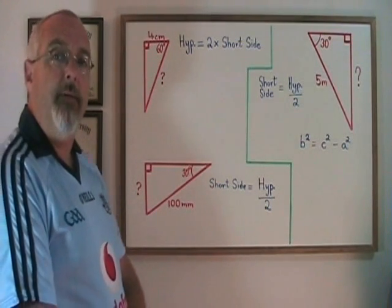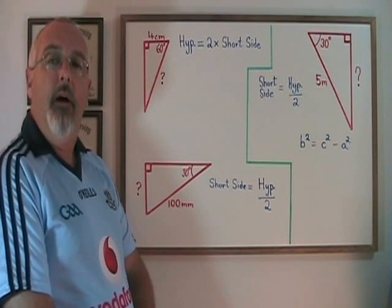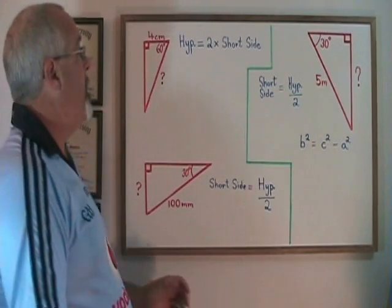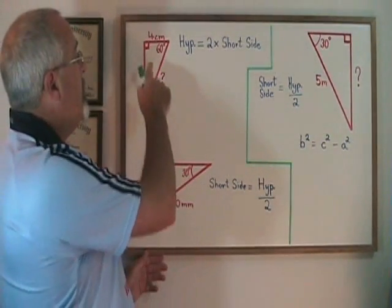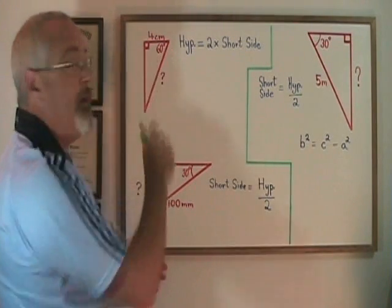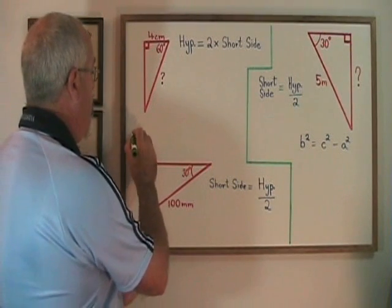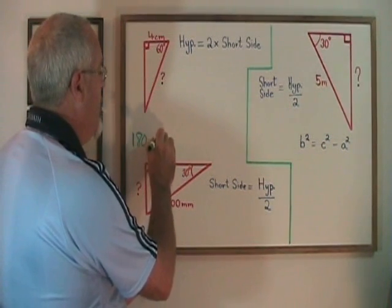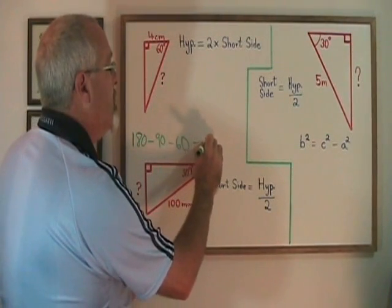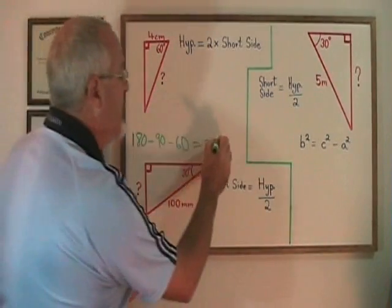But first we have to remember that the three internal angles in any triangle always have to add up to a total of 180 degrees. That means in this triangle where we can see we have a 90 degree angle and a 60 degree angle that are given, we are able to do a simple calculation: 180 minus 90 minus 60, and that gives us 30. We know that the missing angle that was not given has to be 30 degrees.